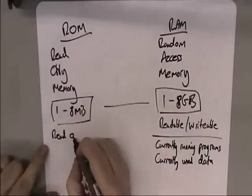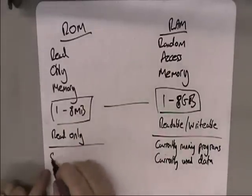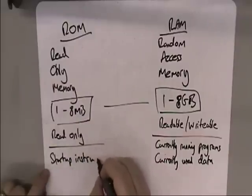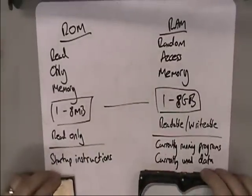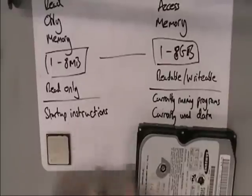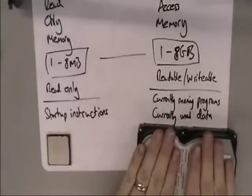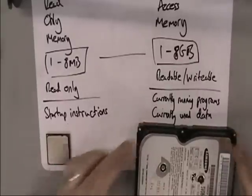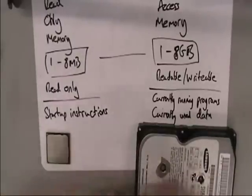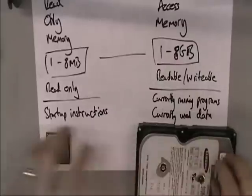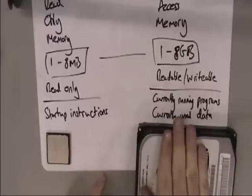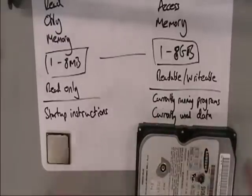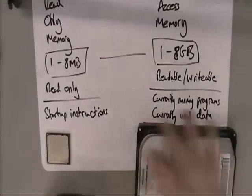ROM is readable only — you can't write to it. Its purpose is for the start-up instructions for your computer. By that I don't mean the operating system. You've got a processor and you've got a hard drive. When you turn the computer on, your operating system — Windows, Linux, Mac OS X or whatever — is on your hard drive, and the processor needs to be able to use it. The processor needs to talk to the hard drive, tell it to spin up, get the data and instructions off it. That's not as simple as it sounds. So the ROM is a very small piece of memory that tells the computer how to start up, how to check if a hard drive is plugged in, how to check if a CD drive is plugged in, which device to go to first, and how to actually start the computer from scratch.